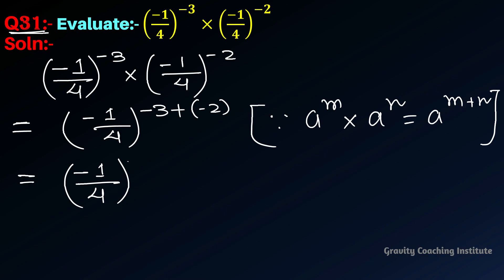And here we have -3 plus -2, which gives us -5. Then we change the negative exponent to positive: (-1/4)^(-5) becomes (4/1)^5, which is 4^5.